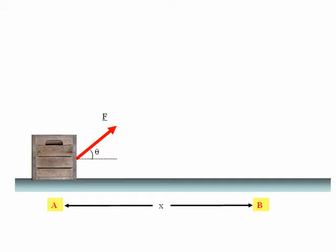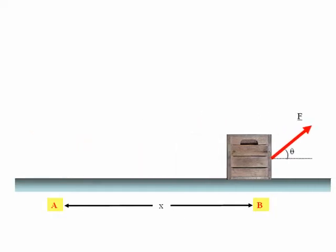So let's consider our crate again, being dragged along the floor by a force F. Previously, we just considered the work done by the applied force F. If we want to determine the total work done on the crate when it moves, we must consider all the forces acting on it.